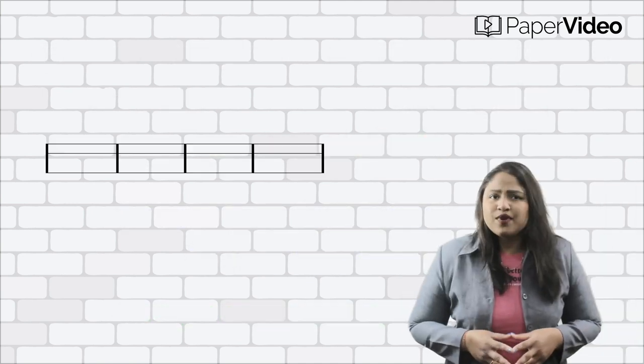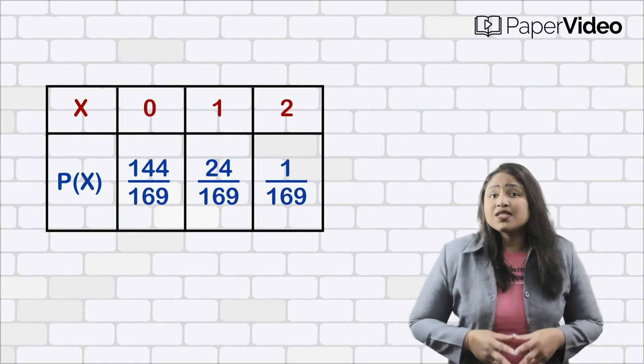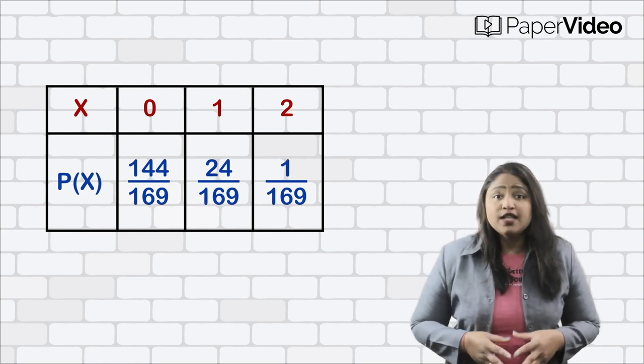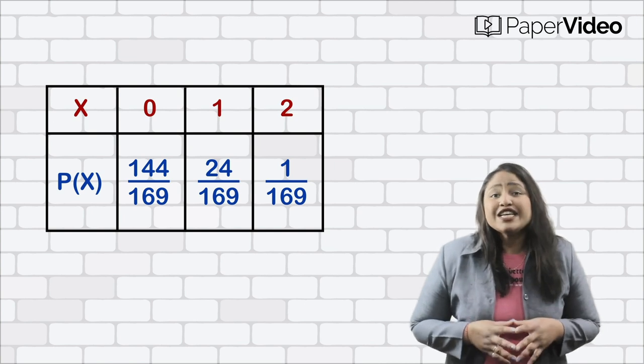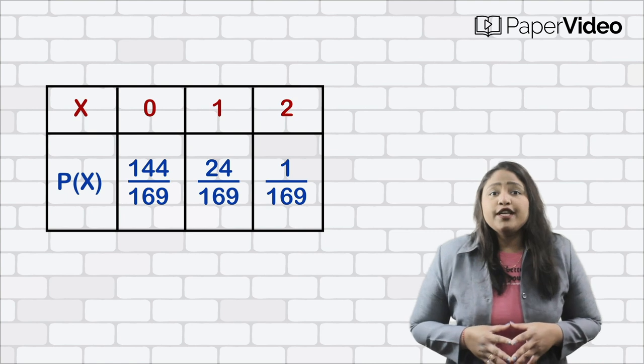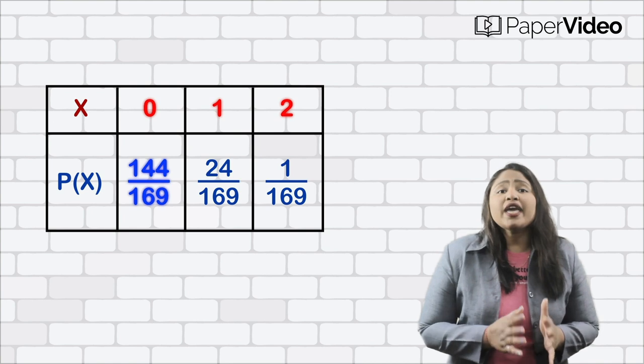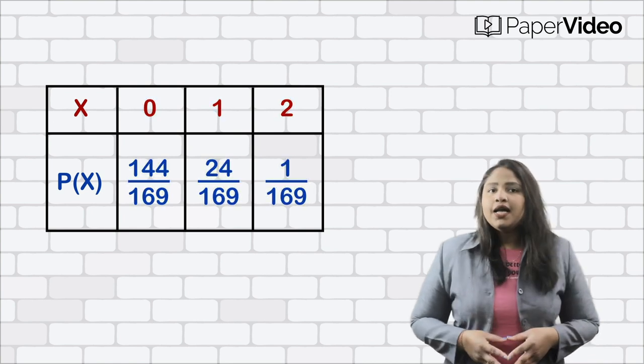This description can be summarized in a table like this. The description given in this table shows the value of the random variable with the corresponding probabilities is called a probability distribution. Therefore, the probability distribution of a random variable X is the distribution of probabilities to each value of X.